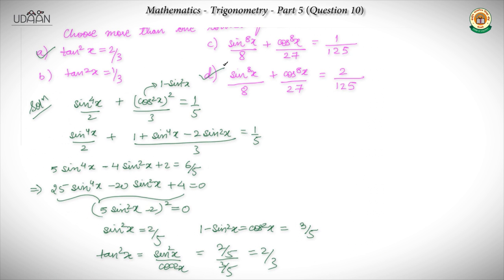So we find the solution. Since A and B are competing options for tan²x, if it comes to 2/3 then it cannot be 1/3 simultaneously. And if it comes to C and D for the power-8 expression, if it comes to 1/25 then it cannot be 2/25. So surely we can say that our answer is A and C.